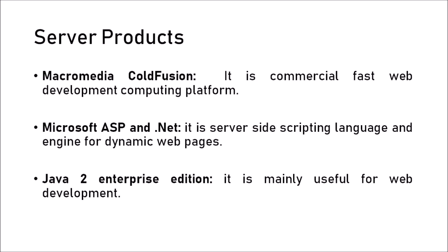After discussing various available servers, we move towards various server products. The first server product is Macromedia ColdFusion — a commercial, fast web development computing platform. It is commercial, meaning you have to pay for it, and it provides a web development computing platform. The second server product is Microsoft ASP and .NET, which is a server-side scripting language acting as an engine for dynamic web pages.